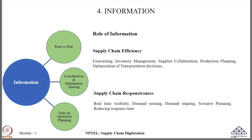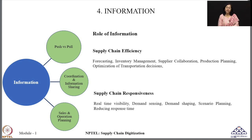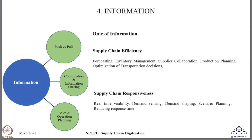Whereas in case of supply chains being responsive, the information system helps achieve real-time visibility. With the use of proper machine learning methods, changes in demand can be sensed, and by offering right promotions, demand shaping can be done. Several scenario planning activities can be done, and all these can help in reducing response time. That is why information is playing a critical role in managing supply chains in an efficient or responsive way with the help of information systems.